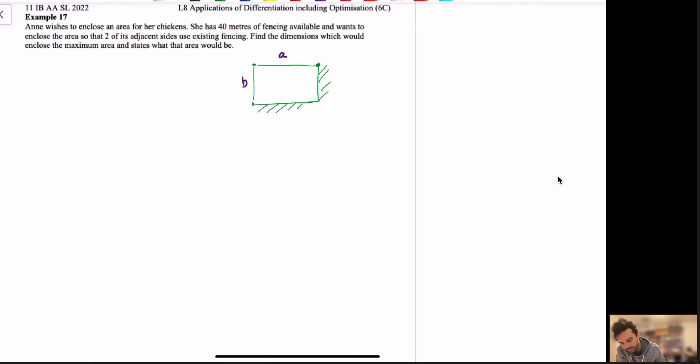Now, she has 40 metres of fencing, so we can now make an expression. A plus B is equal to 40, right? So, this is the total length of fencing she has. A could be 20, then B would be 20. A would be 30, then B would be 10. So, we're not sure what that's going to be yet, but that's our first equation. Next thing is, we want to enclose the area so that we want to maximise this area. So, we can go A is equal to A times B. Now, this is going to be my second equation there, okay?